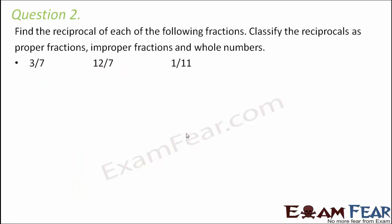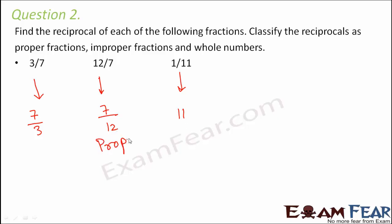Question 2: Find the reciprocal of each fraction and classify as proper fraction, improper fraction, or whole number. Reciprocal of 3/7 is 7/3. Reciprocal of 12/7 is 7/12. Reciprocal of 1/11 is 11, a whole number. Classification: 7/12 is a proper fraction since its numerator 7 is less than denominator 12. 7/3 is an improper fraction since numerator 7 is greater than denominator 3. And 11 is a whole number.